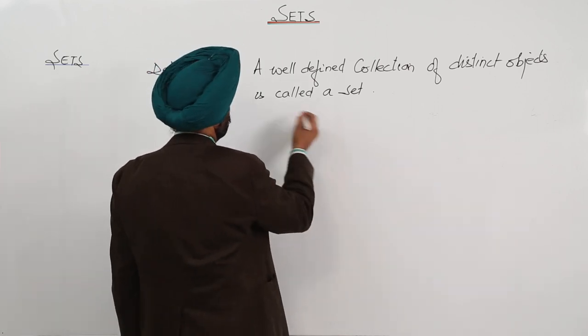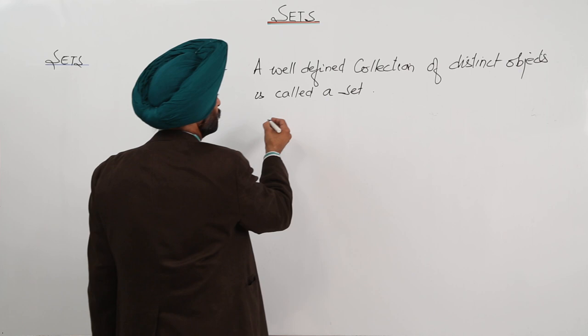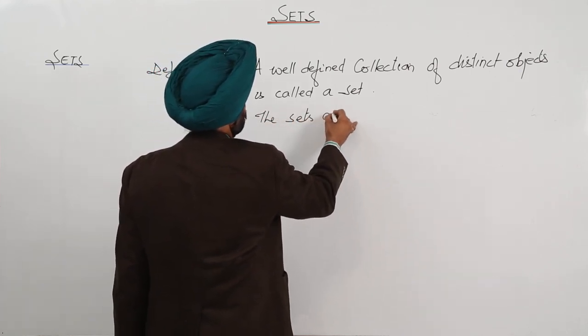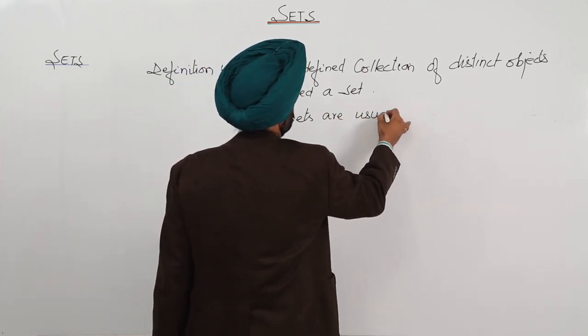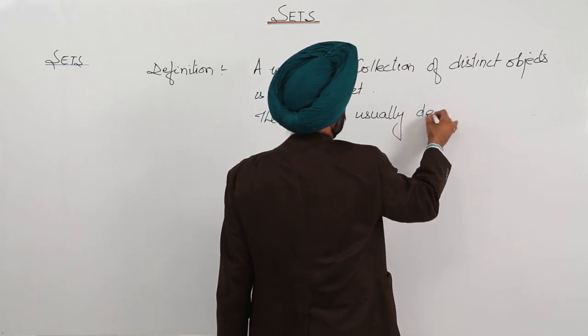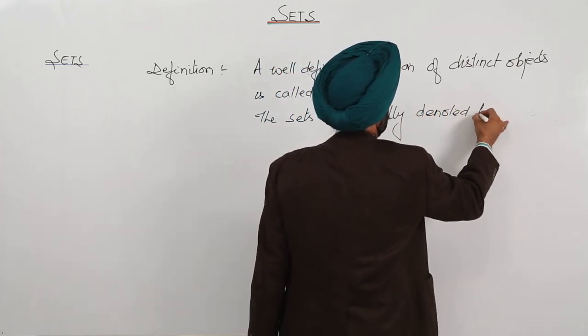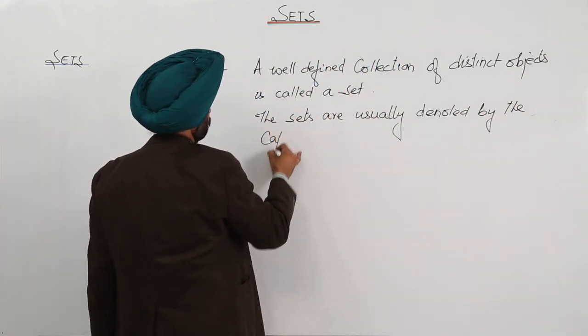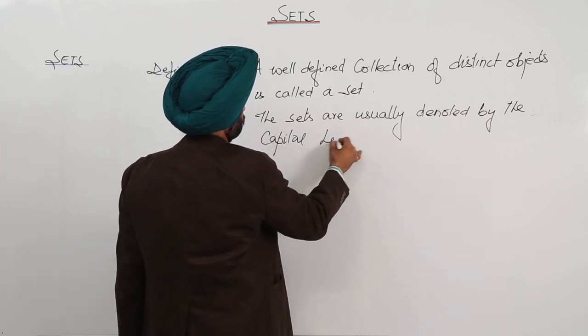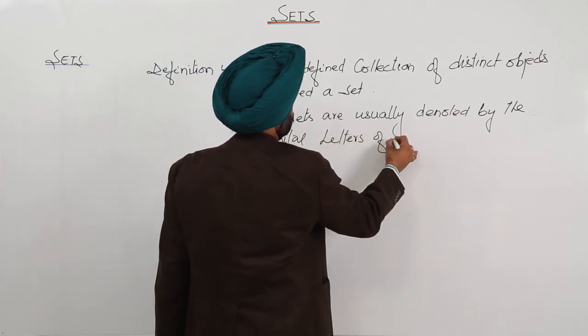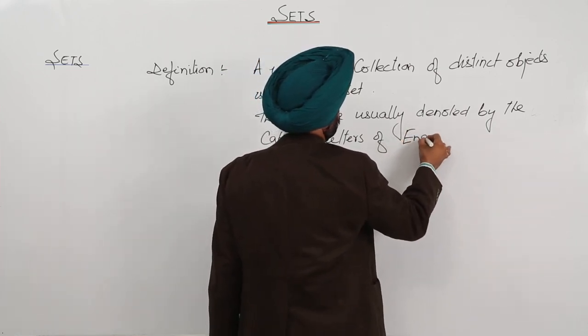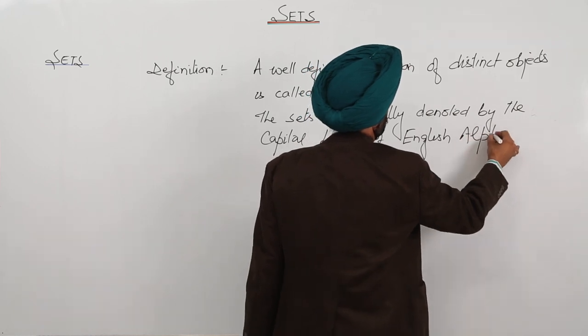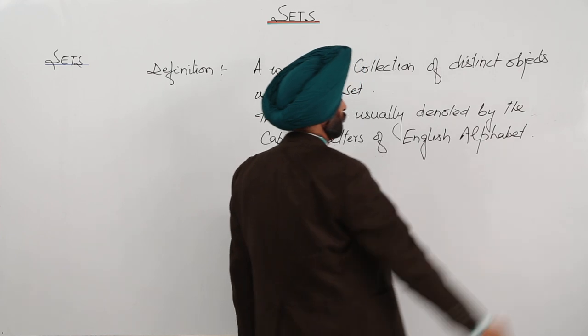But before that, let me give you a small thing. The sets are usually denoted by the capital letters of the English alphabet. Is it clear?